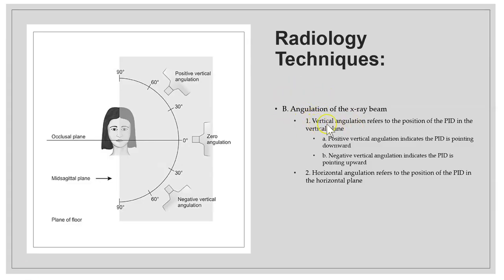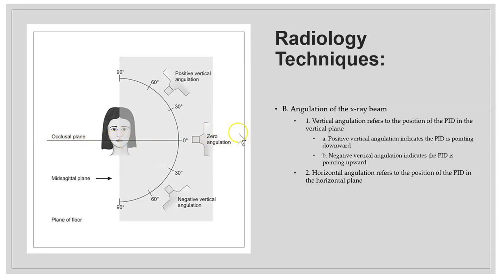Angulation of the x-ray beam: vertical angulation is when the PID is aimed up or down. Positive vertical angulation means the PID is aimed from above. Negative vertical angulation means the PID is aimed from below. When the PID is aimed straight on at the occlusal plane, that is horizontal angulation at zero degrees.